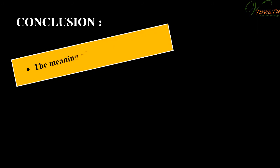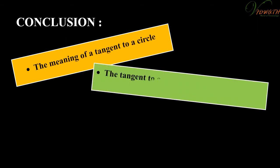Conclusion: In this chapter, we have studied about the following concepts. The meaning of a tangent to a circle. The tangent to a circle is perpendicular to the radius through the point of contact. The lengths of the two tangents from an external point to a circle are equal.